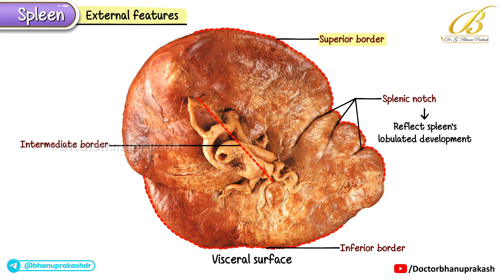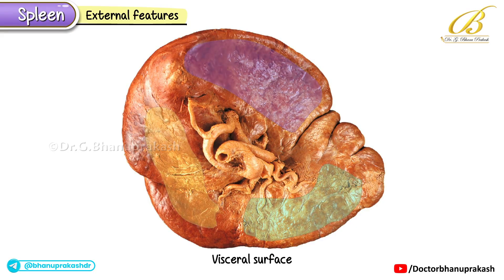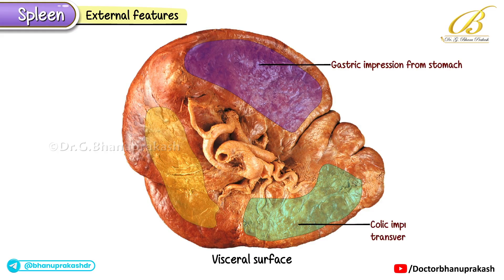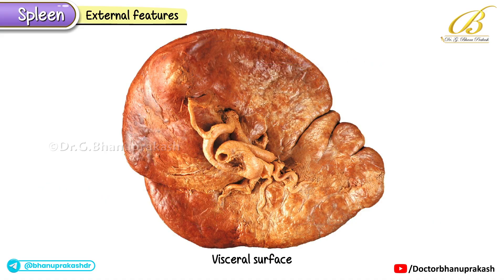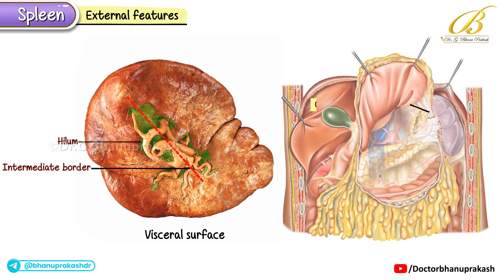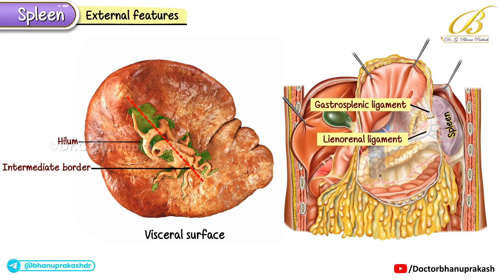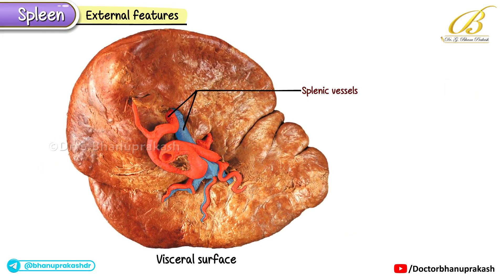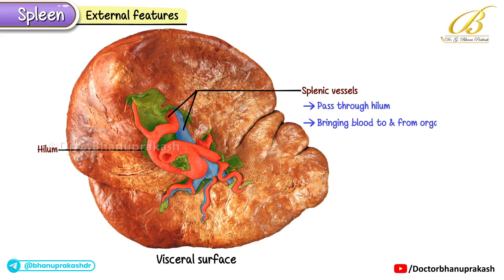The visceral surface itself bears several impressions made by neighboring organs. These include the gastric impression from the stomach, the colic impression from the transverse colon, and the left renal impression from the left kidney. Look closely at the intermediate border — here lies the hilum of the spleen, the gateway where important structures pass in and out. Within this region, you'll find the gastrosplenic ligament and the linorenal ligament anchoring the spleen to nearby structures. The splenic vessels also pass through the hilum, bringing blood to and from the organ.